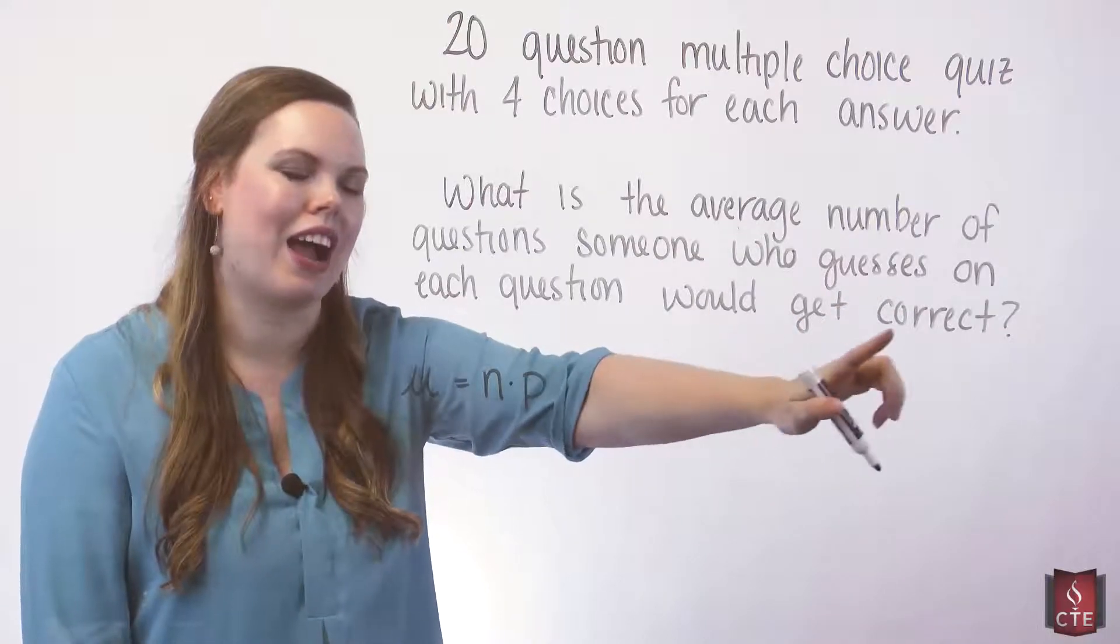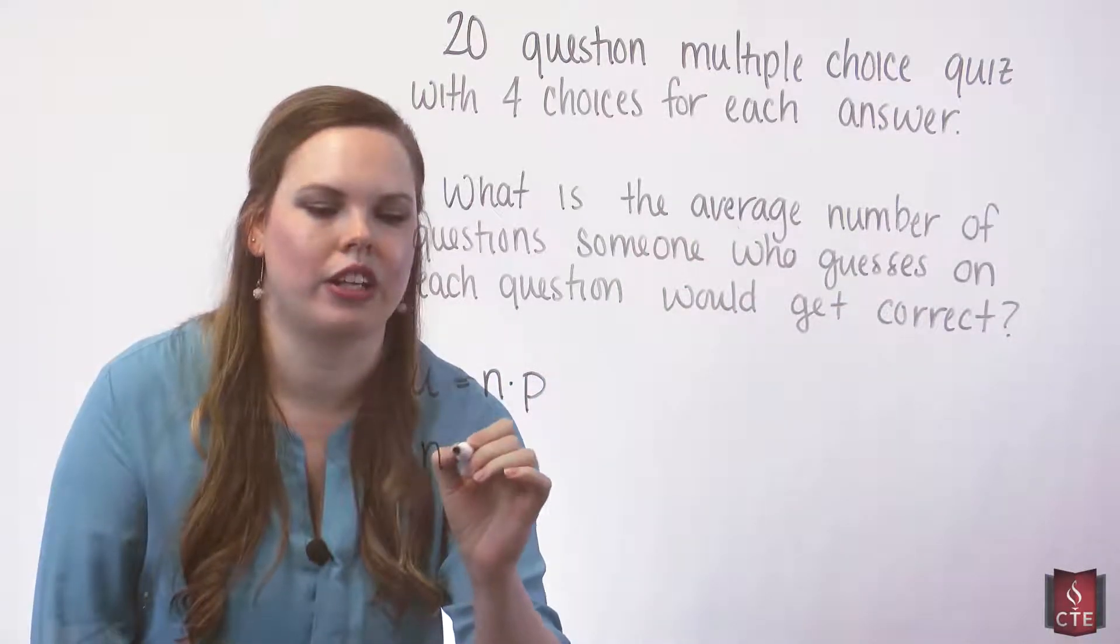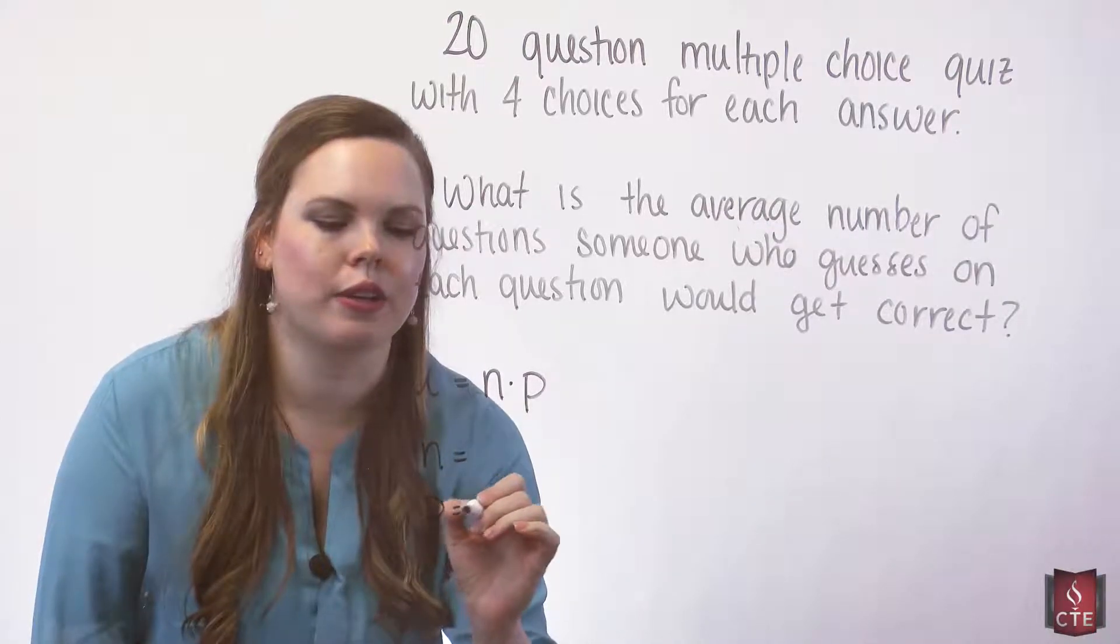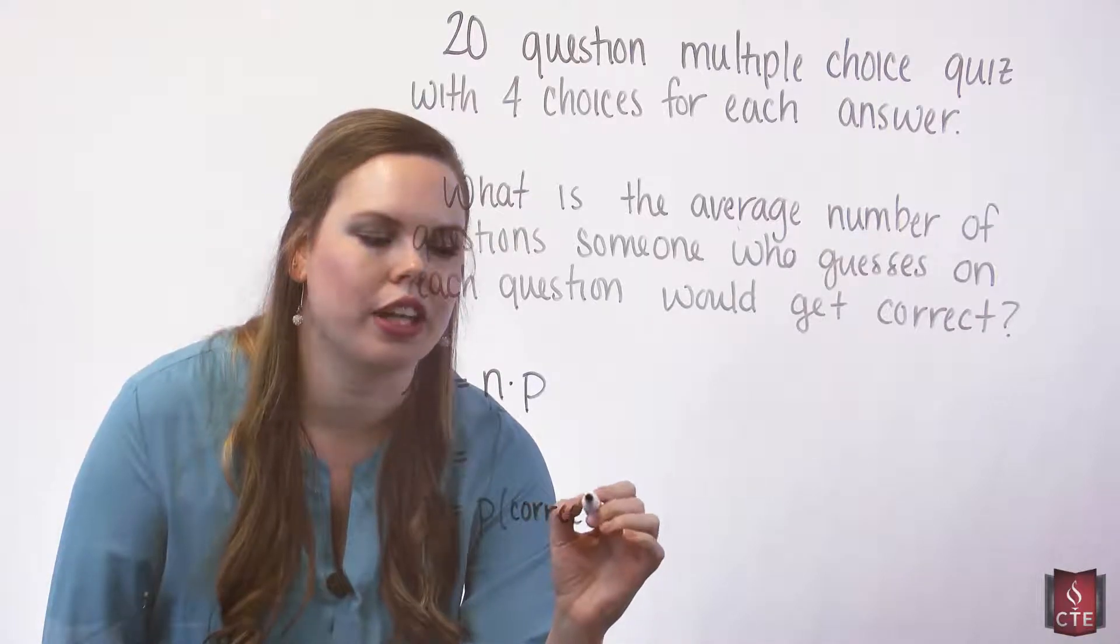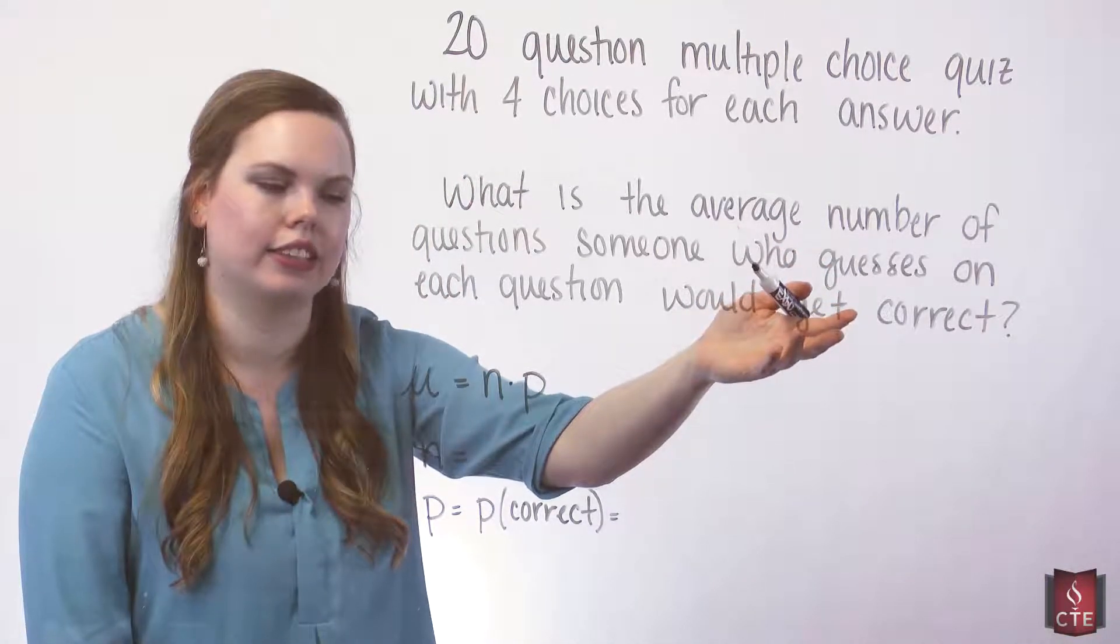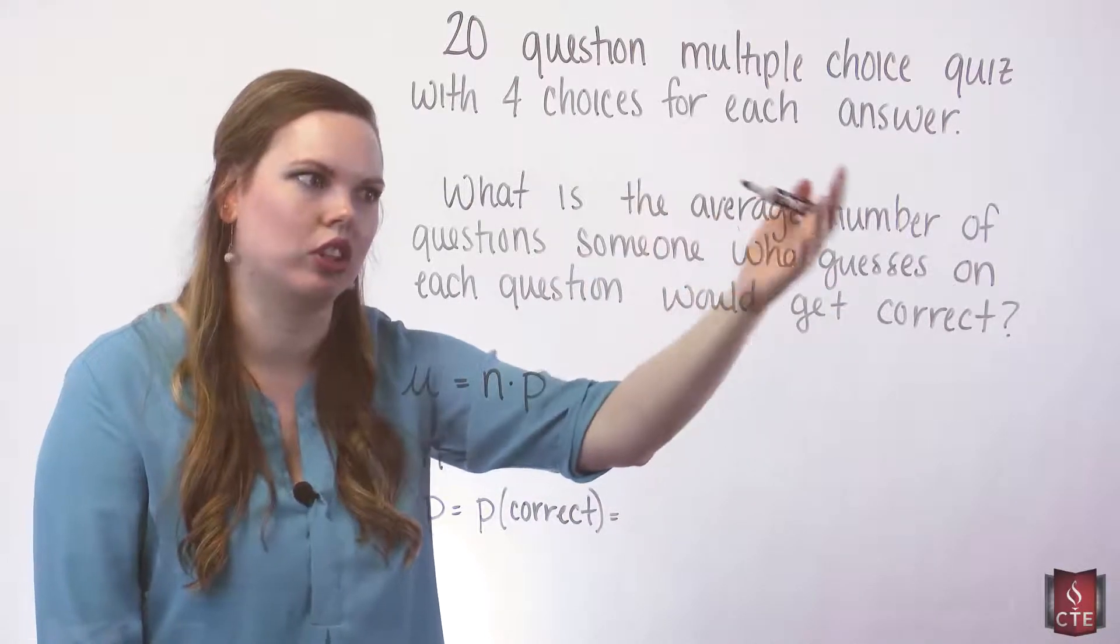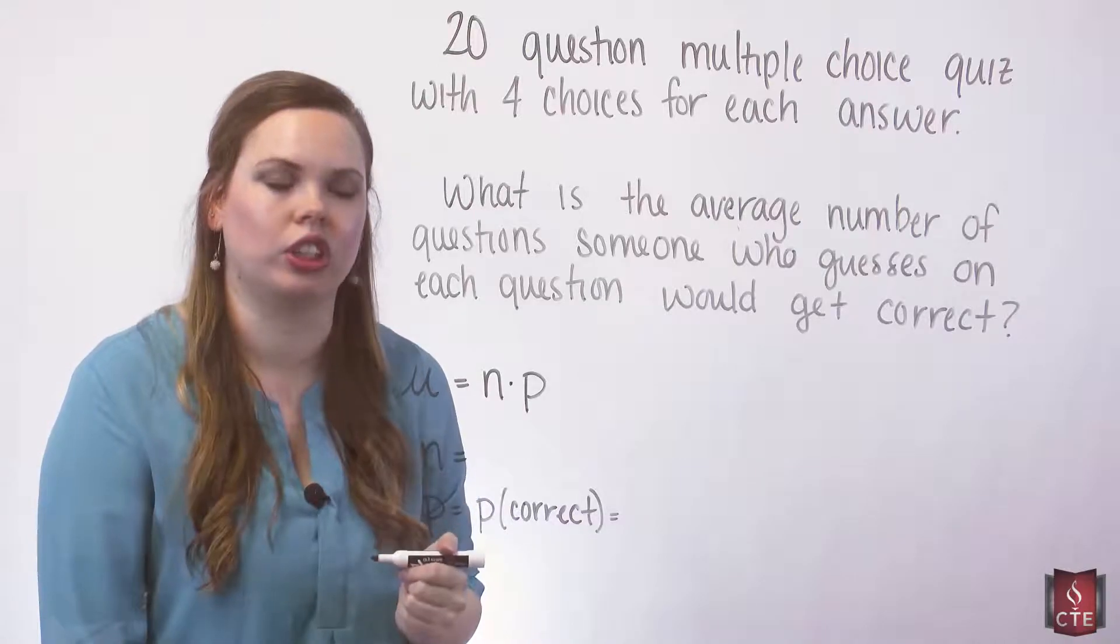Since we're asking about the average number that they get correct, we'll find our n, but our p is going to be the probability that they get the question correct. We want to make sure that our p matches the question that's being asked. So in this case, we want the average number correct, so our p needs to be the probability that we get one question correct.